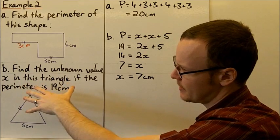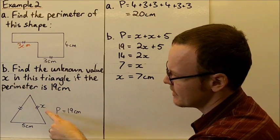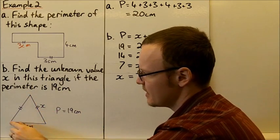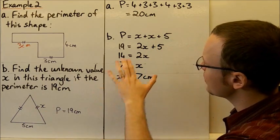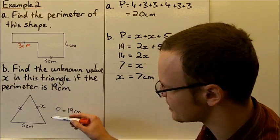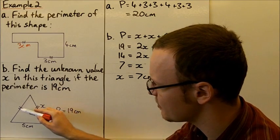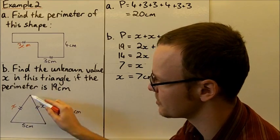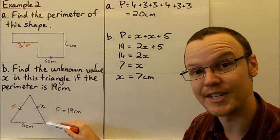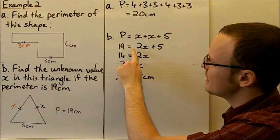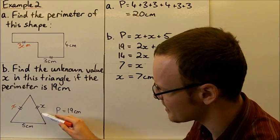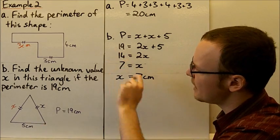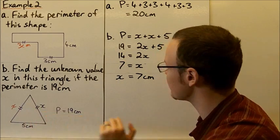For the second part of the example, we need to find the unknown value x in a triangle where the perimeter is 19 centimetres. Two sides are equal, both labelled x, and the third side is 5 centimetres. So the perimeter equation is x plus x plus 5 equals 19, which gives us 2x plus 5 equals 19. Taking away the 5 centimetres leaves us with 2x equals 14.